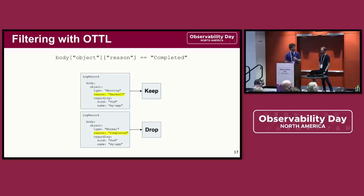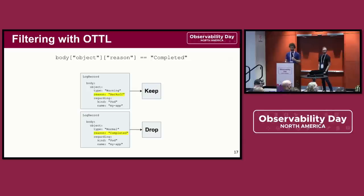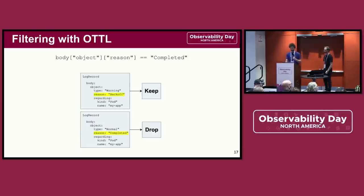Now that we've ensured the body looks like how we expect it to, we can start checking the values of the event itself. Remember, we want to drop events that have a reason of 'completed.' OTTL allows nested indexing, so it's really easy to reach into the event and grab a value and compare it to the static string 'completed.' You can see in the body of an example that we drop the completed event, but we keep the top event.